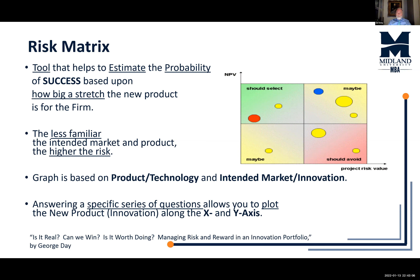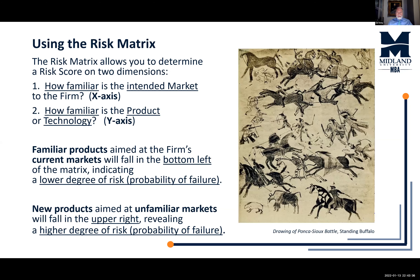We're going to see a graph based on product technology as well as intended market innovation. We're going to answer specific questions that allow us to plot a dot on the graph along an x-axis and a y-axis. The matrix helps us view our risk from closeness — how close is the new product or technology to our existing product suite, and how close is the market?